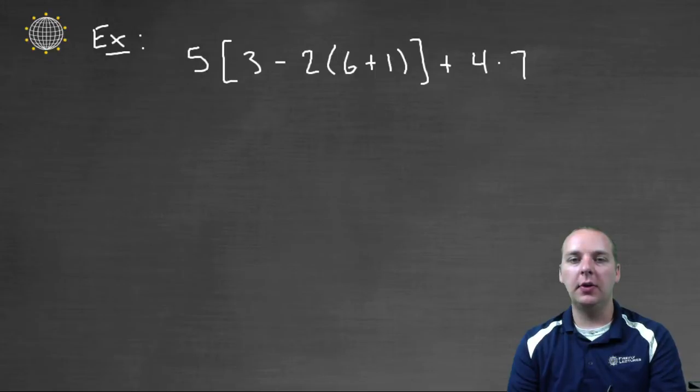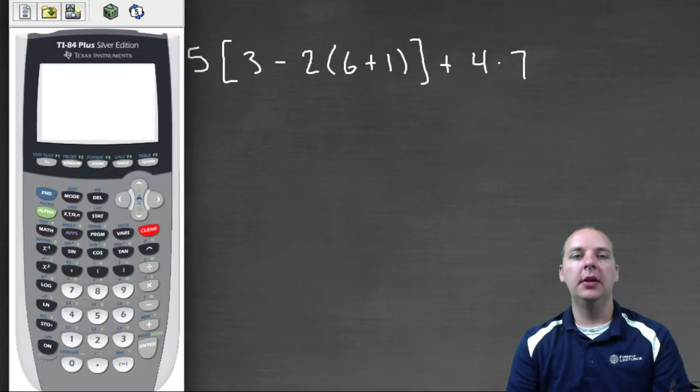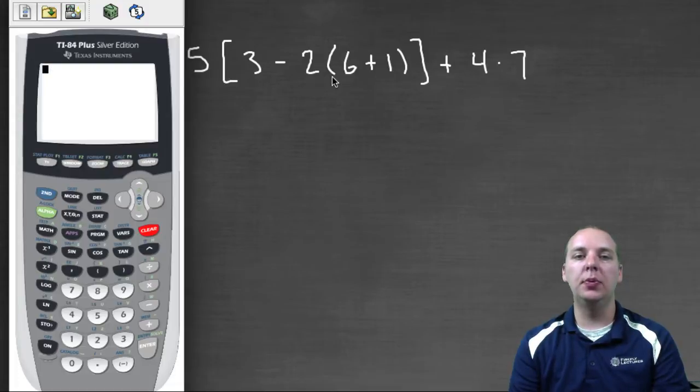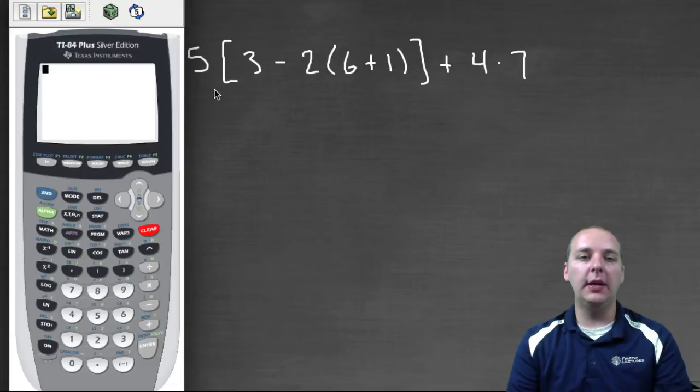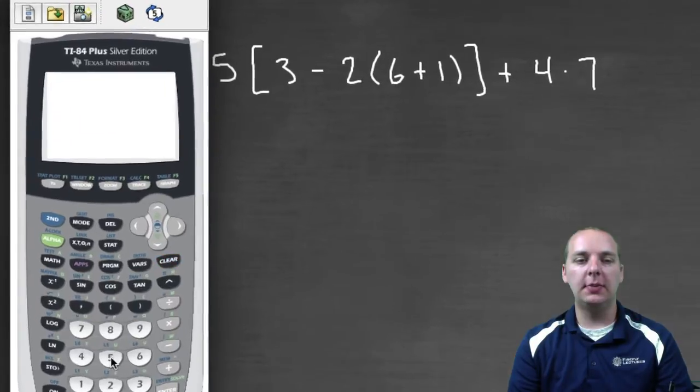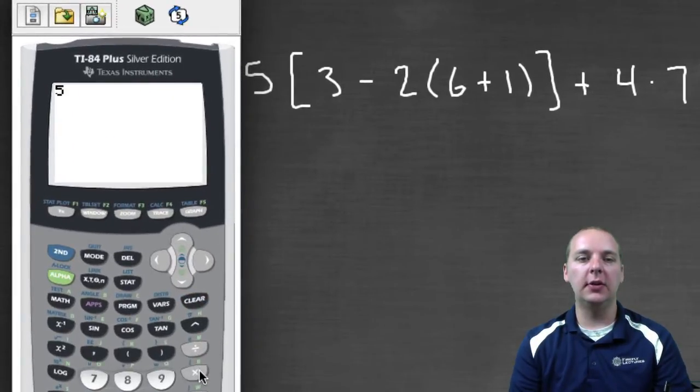Okay, so our first example here is 5 * [3 - 2(6+1)] + 4*7. So basically we just type this in verbatim. Now we don't need a bracket key, a bracket is just another parenthesis. So we'll just type this in exactly as it's written.